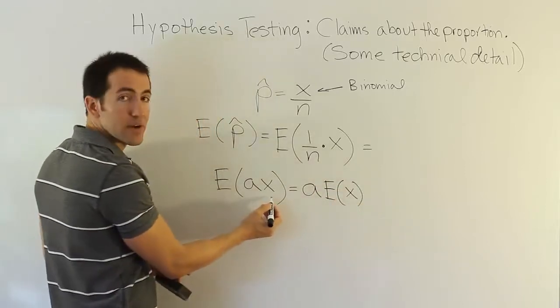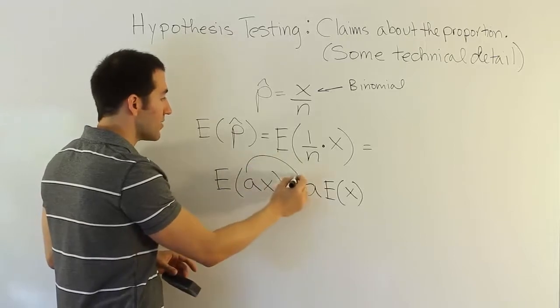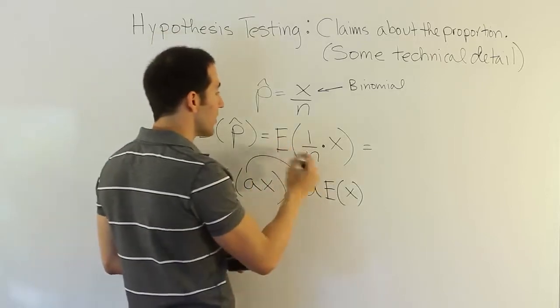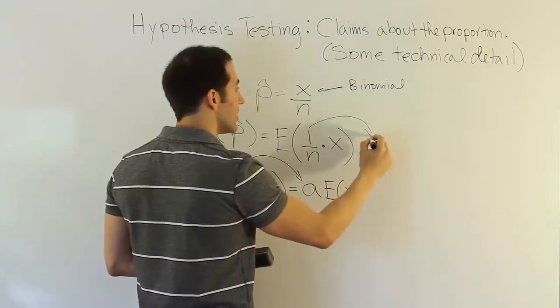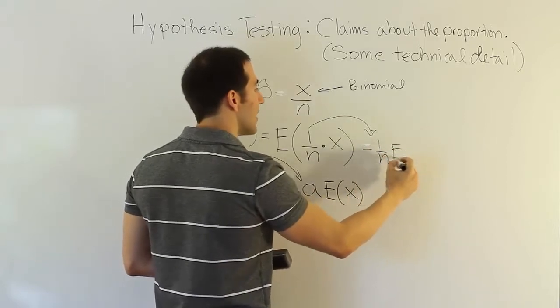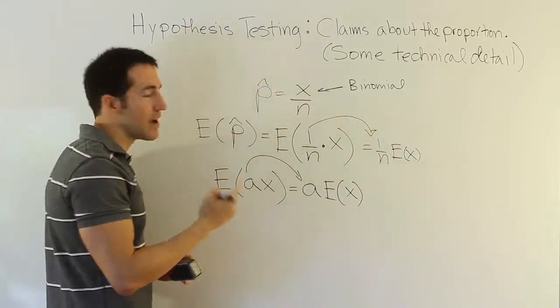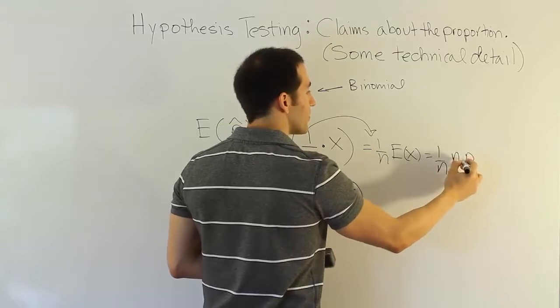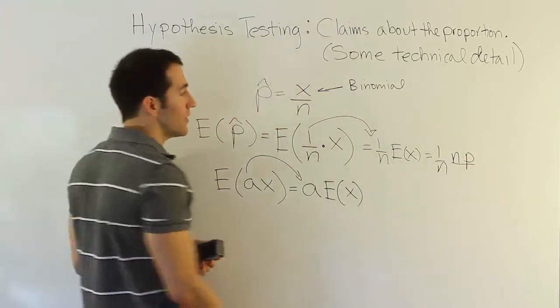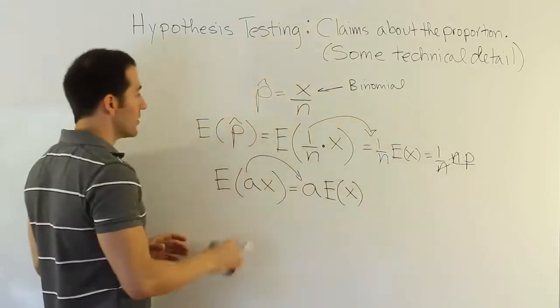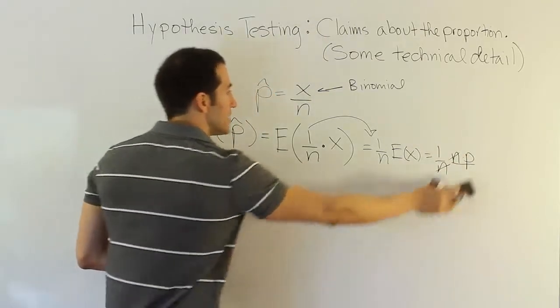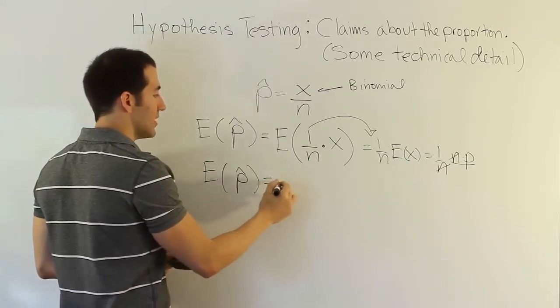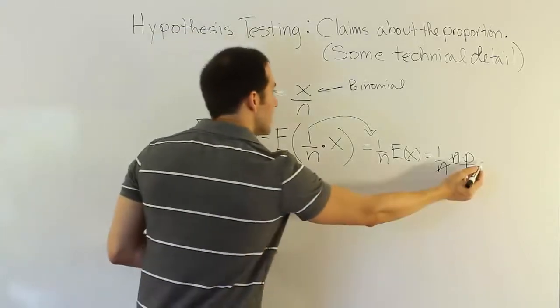So remember, the random variable here is x. a is a constant. We can just pull that constant out in front and multiply it by the expected value for x. So what we can say is if I want to know the expected value for this term, I can just pull this out in front and say 1 over n times the expected value of x. But we just said that the expected value of x, since x is binomial, is essentially going to be n times p. And then from there, we can cross out these two n's and come to the conclusion that the expected value of p-hat is just p. The expected value for p-hat is simply p, the population proportion.